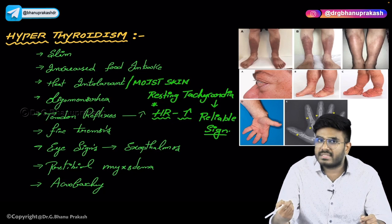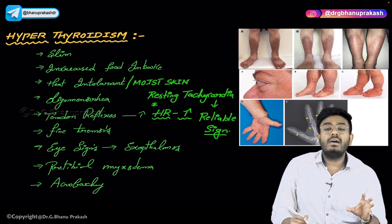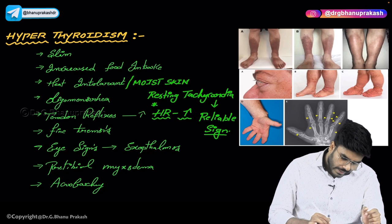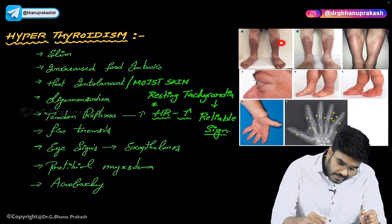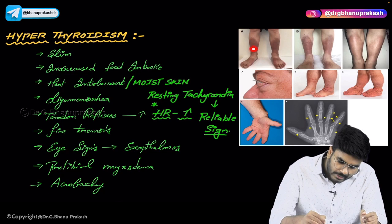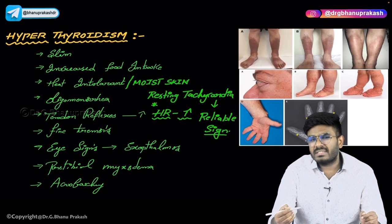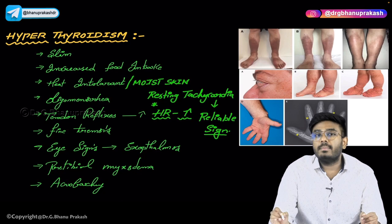These patients will also have fine tremors. If you look at their eyes, they will have exophthalmos — eyes protruding out of the orbital cavity, bulging eyes. And if you look at their shin region (the tibial region), there is deposition of mucopolysaccharide materials called pre-tibial myxedema. Students often think myxedema is only seen in hypothyroidism, but pre-tibial myxedema is associated with hyperthyroidism.